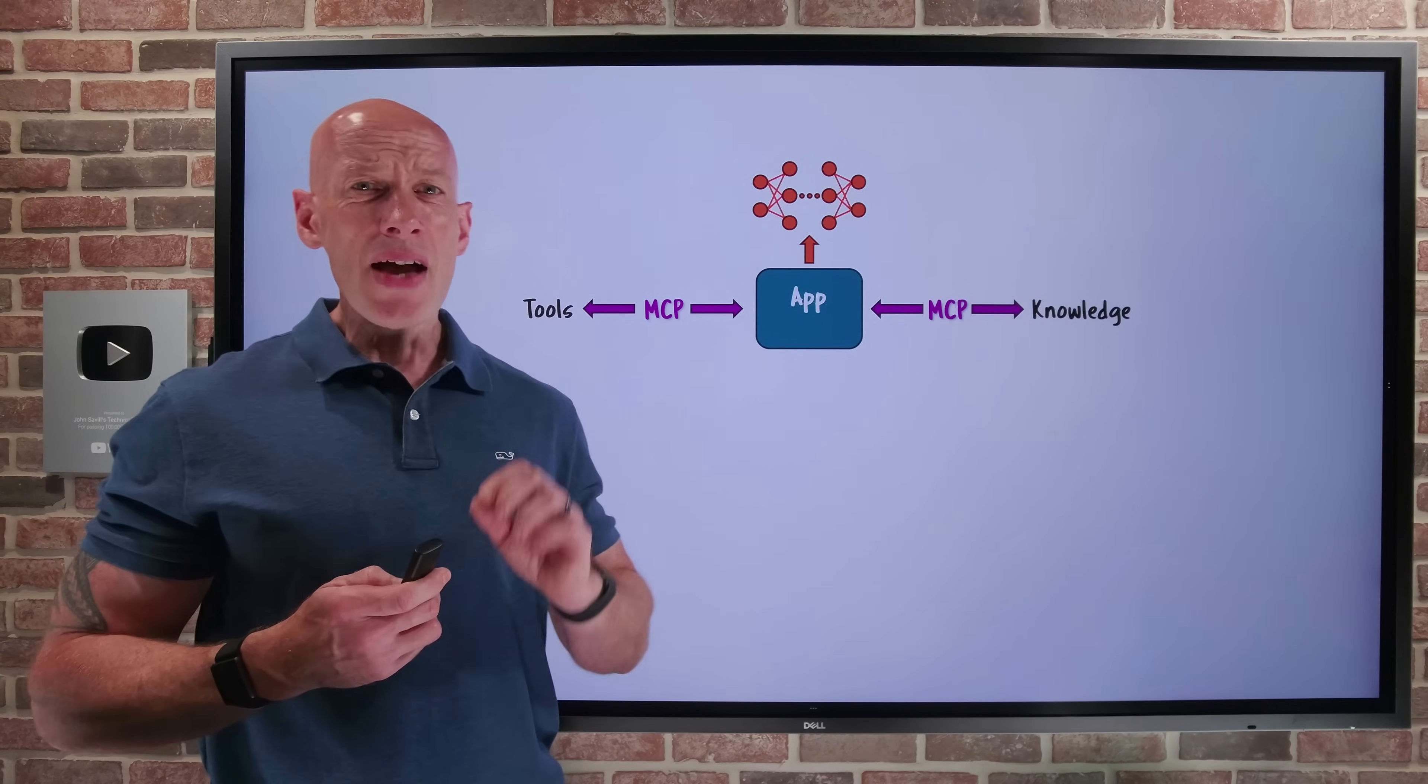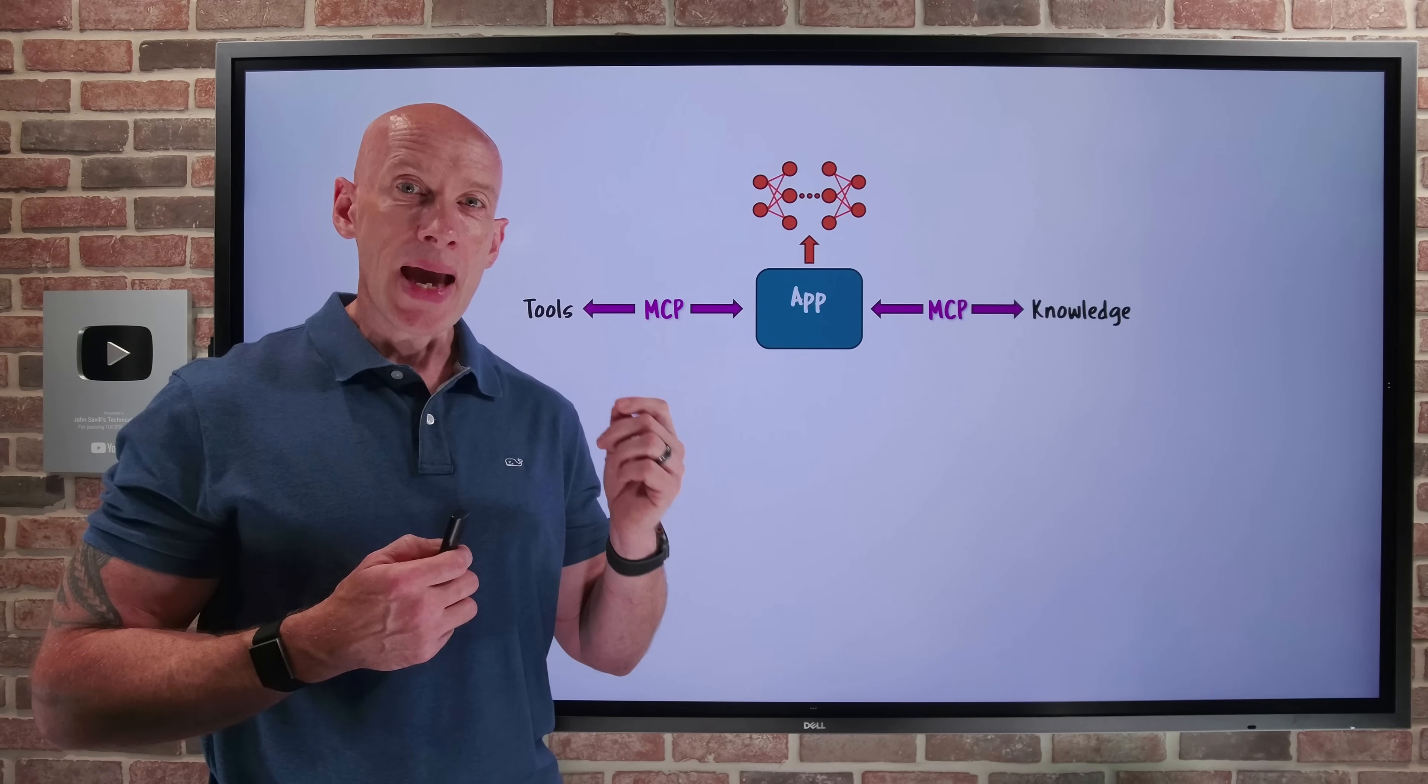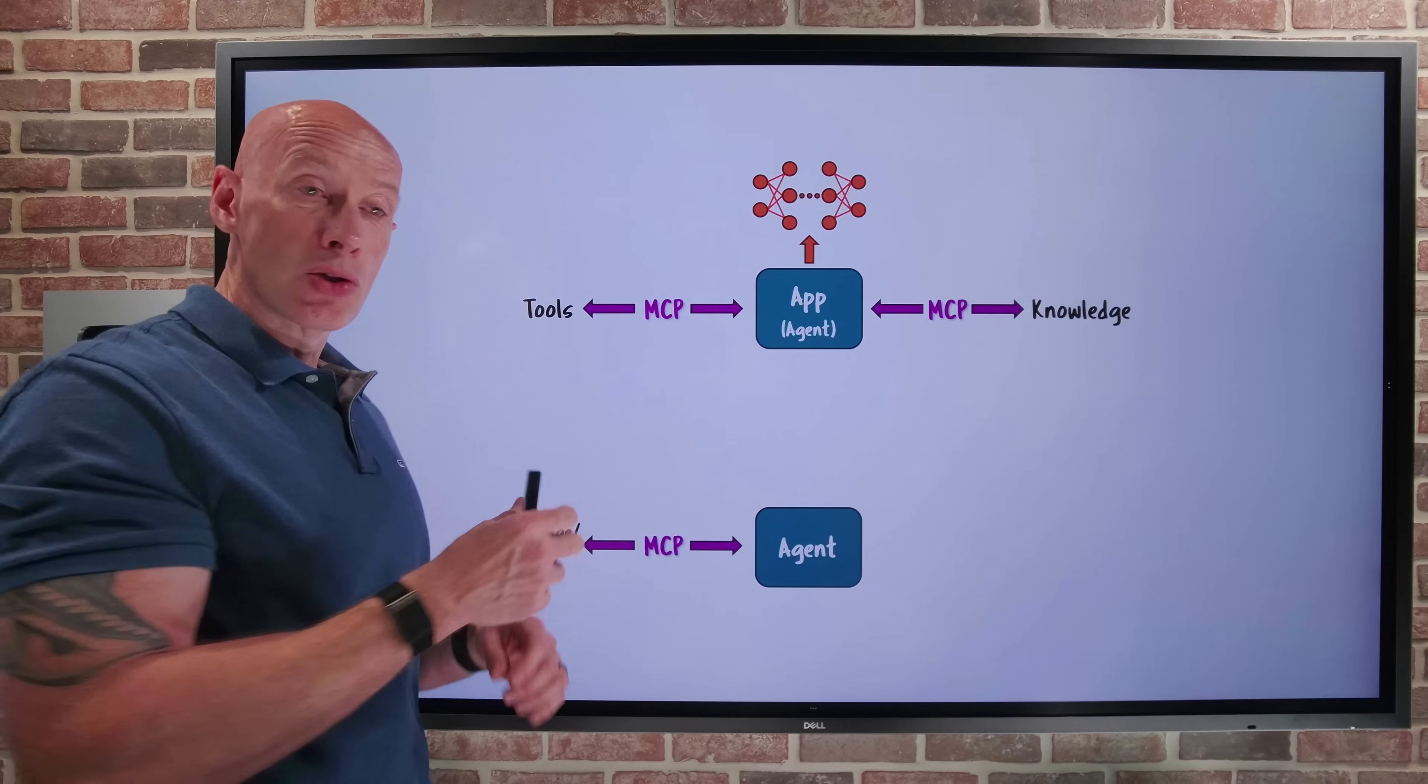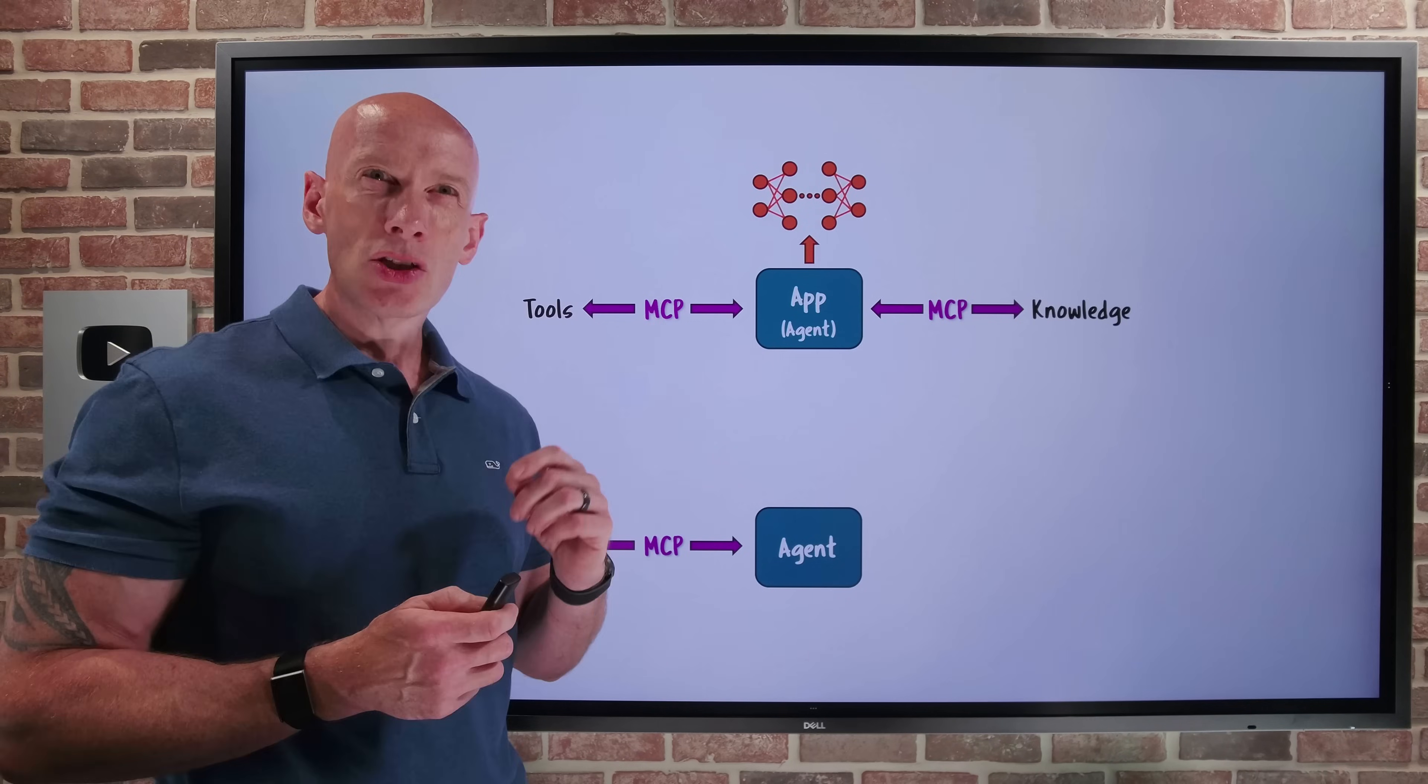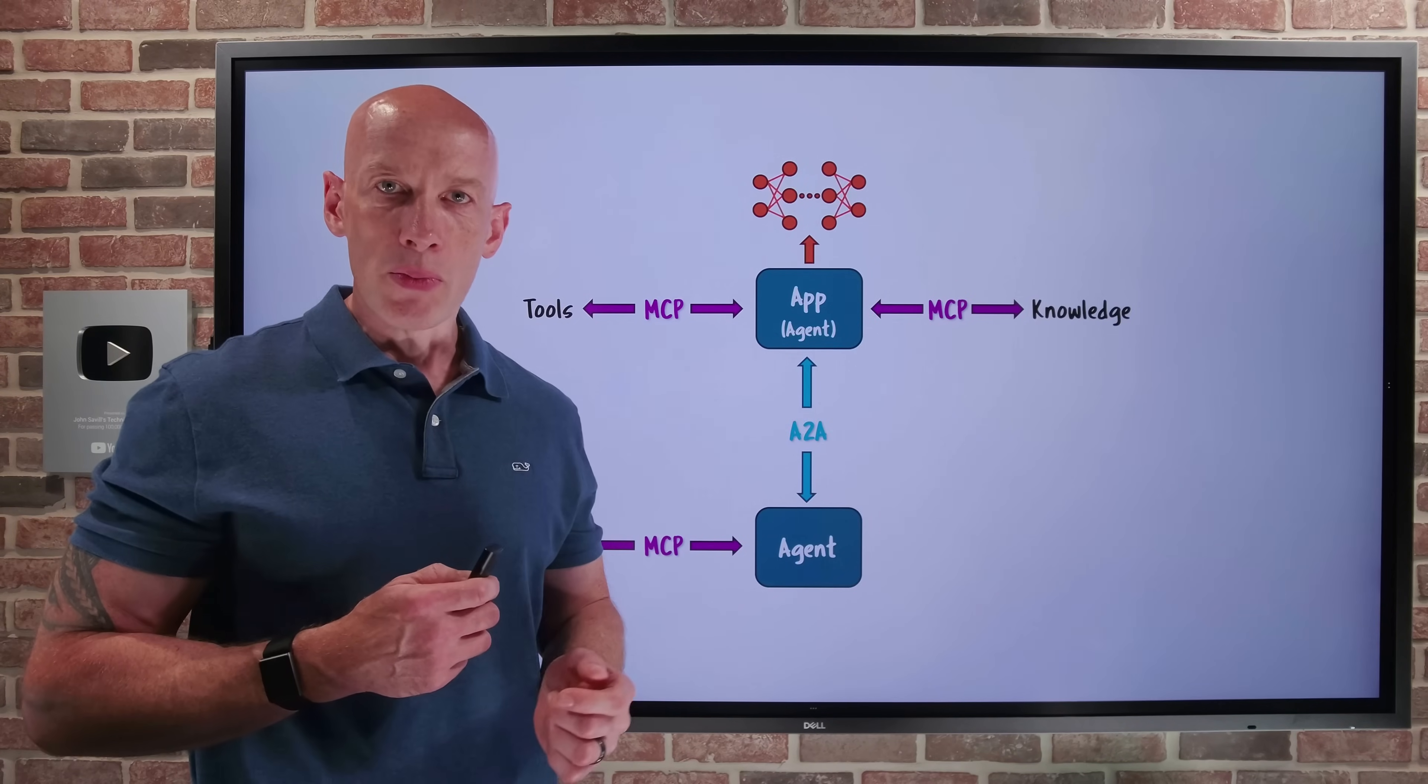Then we have A2A, or agent-to-agent. This, again, is an open protocol, and it enables AI agents to communicate and collaborate together. I have another agent. It likely uses MCP to talk to its knowledge and tools. Well, when I have multiple agents, they have to be able to understand what the other agent can do. They have to be able to delegate tasks to each other and collaborate. This is what A2A performs.